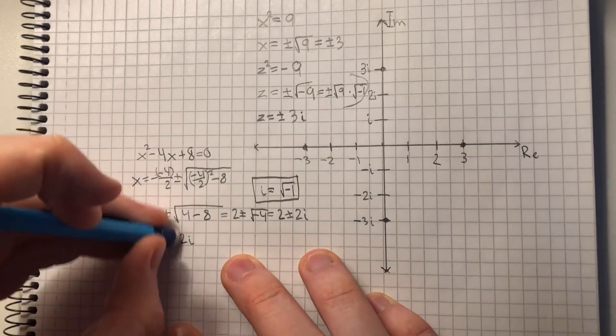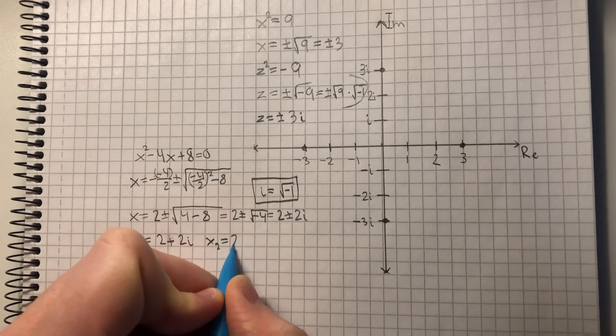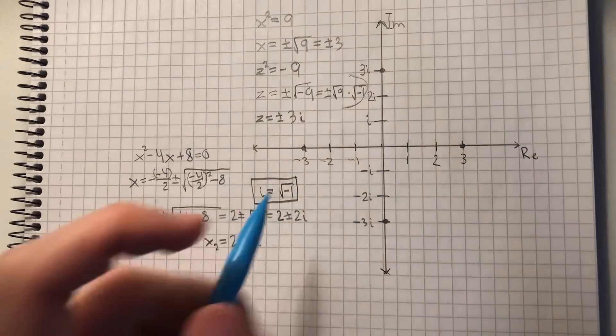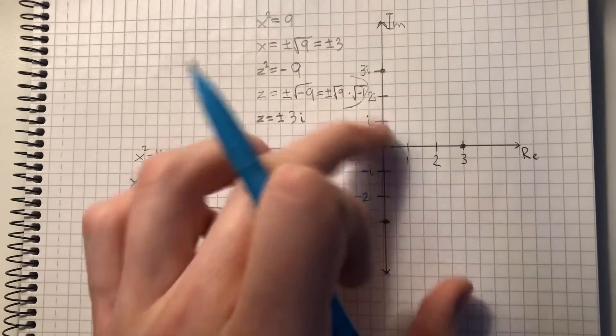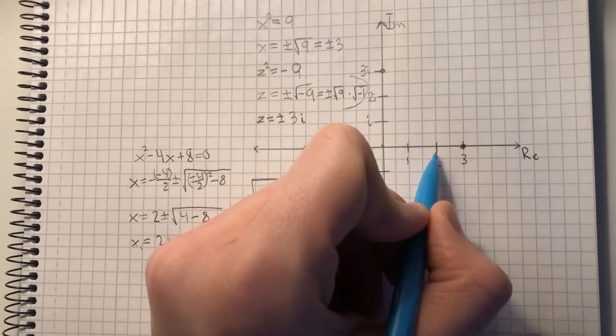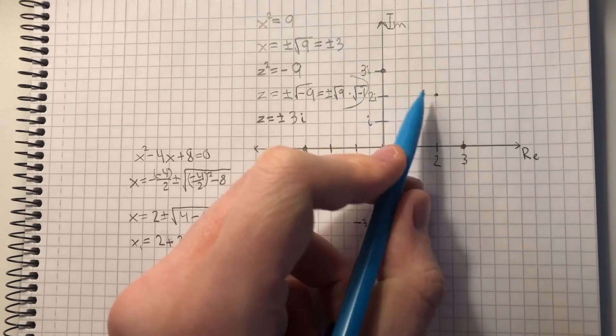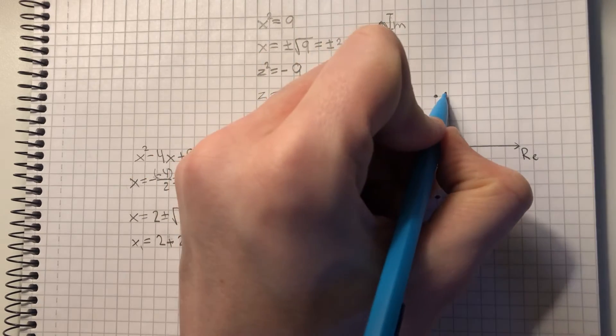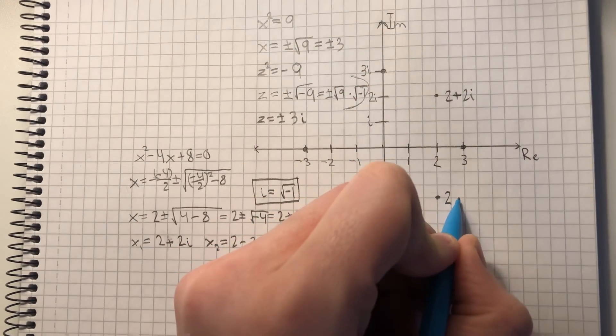So x1 is 2 plus 2i, and x2 is 2 minus 2i. Let's draw that up on this more complex number plane. We take 2 plus 2i and 2 minus 2i and plot them on the complex plane.